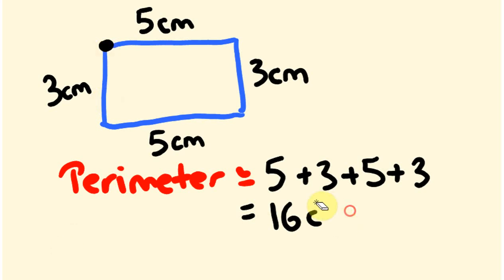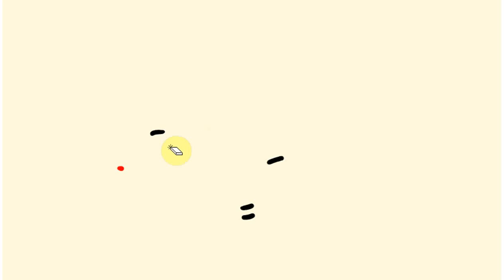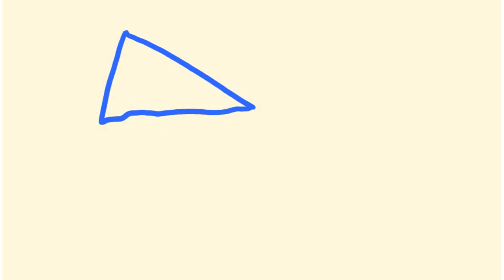So anyway what about we do a different type of shape. Let's work out the perimeter of the following. What about I do this shape here which is a triangle. Now I'll put some distances on this. This side here is 7cm. This one here I'm going to use a bit of a nasty one. I'm going to change this one to 75mm. And this one here is 4cm.